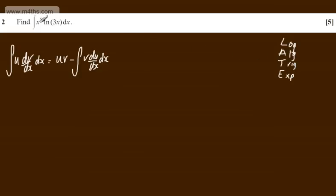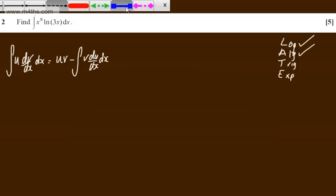So if I look here, I've got an algebraic term and a log term. So we've got log and algebraic. Therefore, what I'm going to say now is that u will be the log term and I'm going to have dv/dx to be the algebraic term.